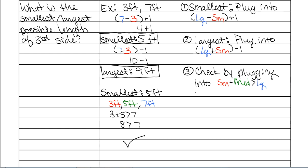Now check the largest. The largest side was 9 feet. Putting those in order: smallest side is 3 feet, medium side is 7 feet, and largest side is 9 feet. Plugging in: is 3 plus 7 greater than 9? 3 plus 7 is 10, and it is greater than 9 — it works out. So that confirms that the smallest the third side can be is 5 feet and the largest it can be is 9 feet.